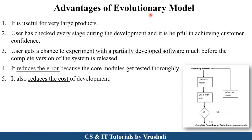The advantages of the evolutionary model: First, it is useful for large and long ongoing projects because it checks every stage during development — after every module, feedback is taken from the customer. Second, the user gets a chance to experiment with partially developed software and does not have to wait for the full version. Third, it is very easy to reduce errors because you only need to solve errors in a particular module, not the complete project. It also reduces the cost of development. The flow for each module is: initial requirement, construct the model, check with user — if okay, move to the next module; if not okay, revise and reconstruct the module.